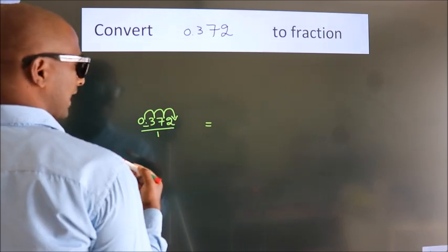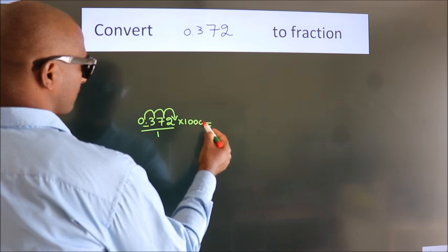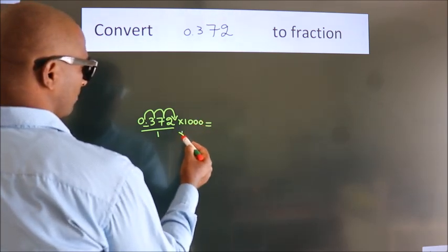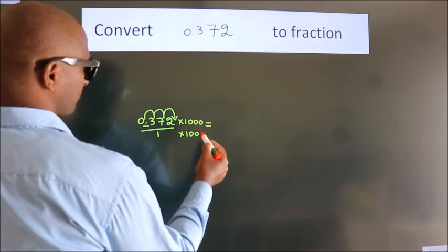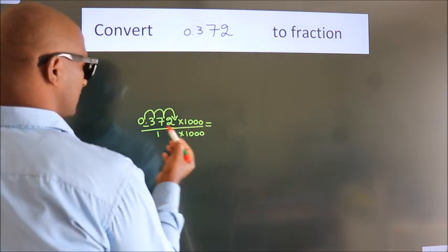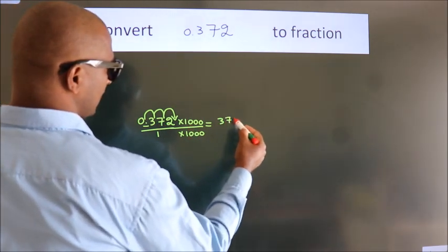we have to multiply it by 1000. Whatever number you are multiplying in the numerator, in the denominator also do the same. Next, 0.372 times 1000 equals 372.